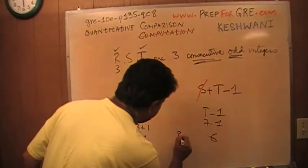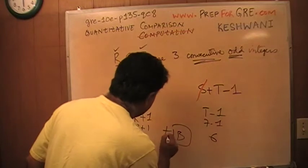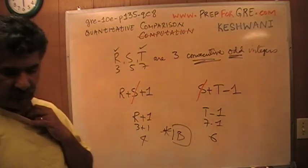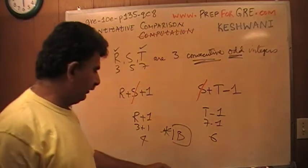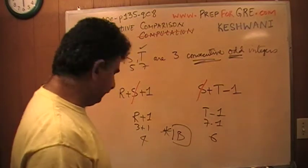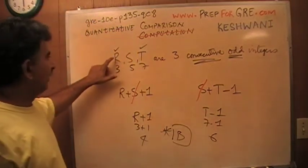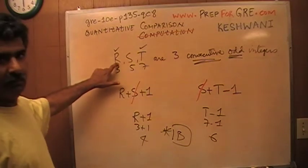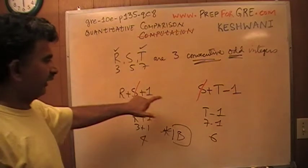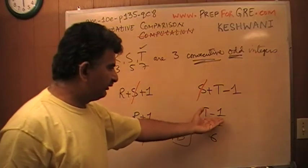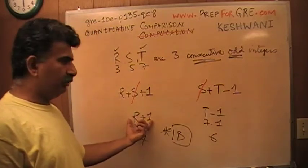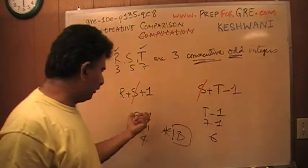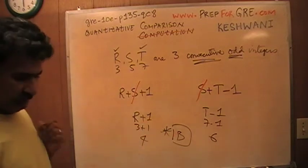The answer is B. It doesn't matter what number you plug in, that fact is not going to change. Even if you try out negative numbers, you will see that nothing changes. The fact will still remain that by the time you get T, the T is 4 more than R. You subtract 1 from T, that quantity is still 3 more than R. You add 1 to R, this quantity is still 2 more than R plus 1, as you can see right there.